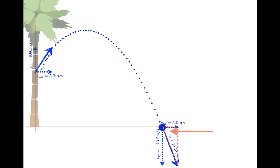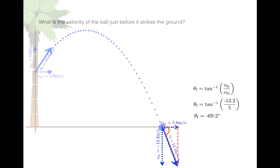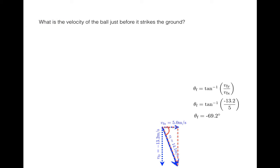And it's also typical to want to find this angle here, and you can use trig to do that. The inverse tan of vfy over vfx will give you that angle, and that turns out to be -69.2°, and the negative value there is indicating that the angle is measured clockwise from the positive X direction.